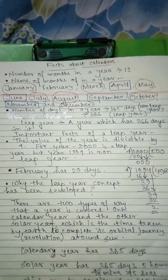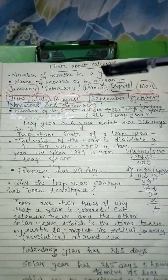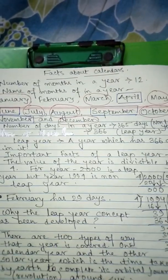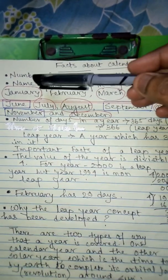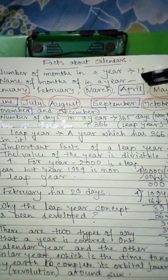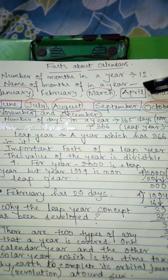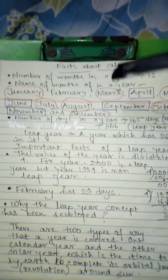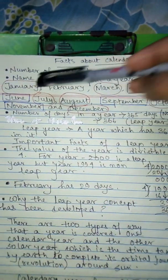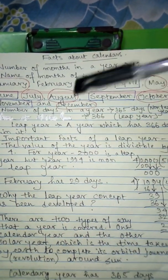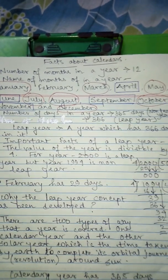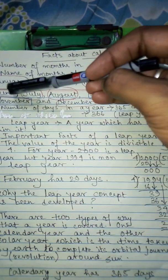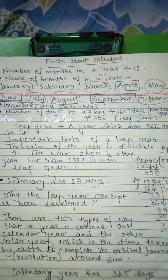A few of the months are circled in red and a few are put in a rectangle in blue ink. The months circled in red — January, March, May, July, August, October, and December — have 31 days. The months in the blue rectangle — April, June, September, and November — have 30 days.